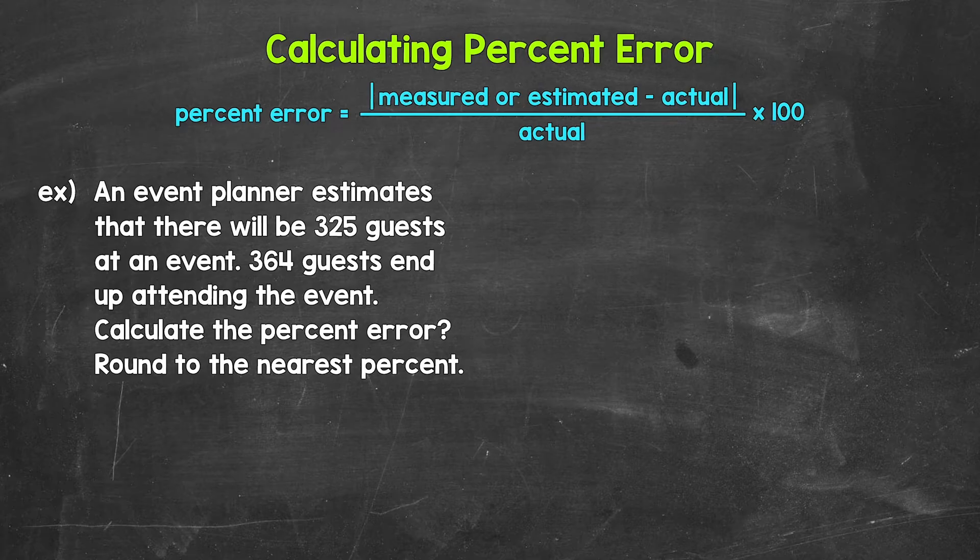Now remember, percent error is a way for us to see how accurate a measurement or estimation is relative to or compared to the actual value. Basically, it's a way for us to see how far off a measurement or estimation is, expressed as a percentage.